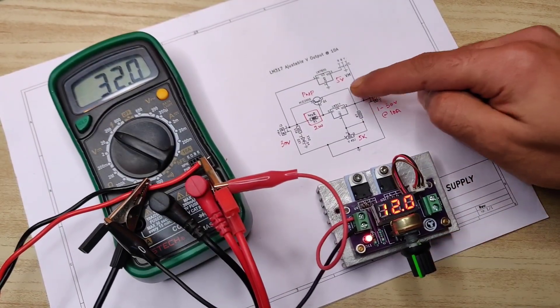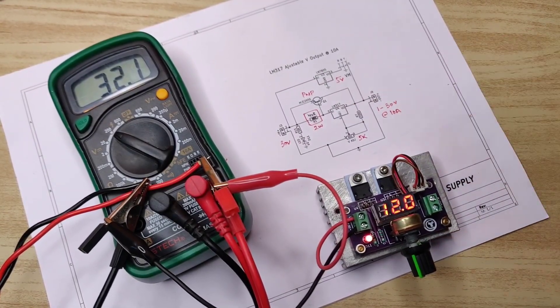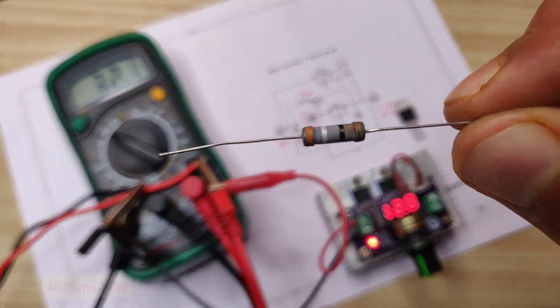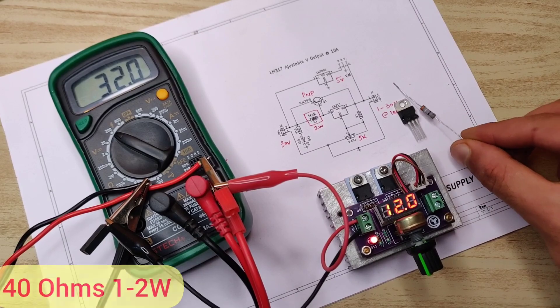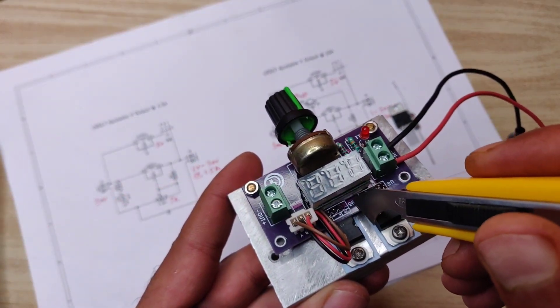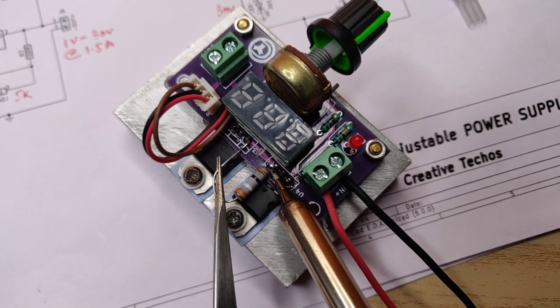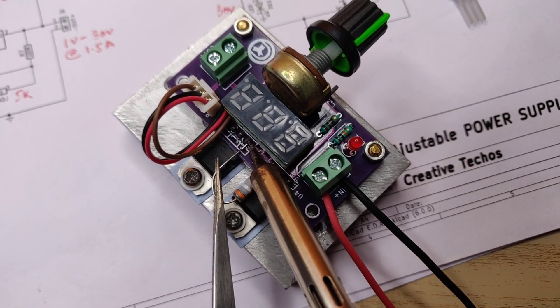Okay, now let's upgrade it to 10 ampere. According to the second diagram, we just need this NPN transistor and the 40 ohm resistor. As the PCB was designed for 1.5 ampere, we need to do the modification. According to the second diagram, we need to connect resistor between input.